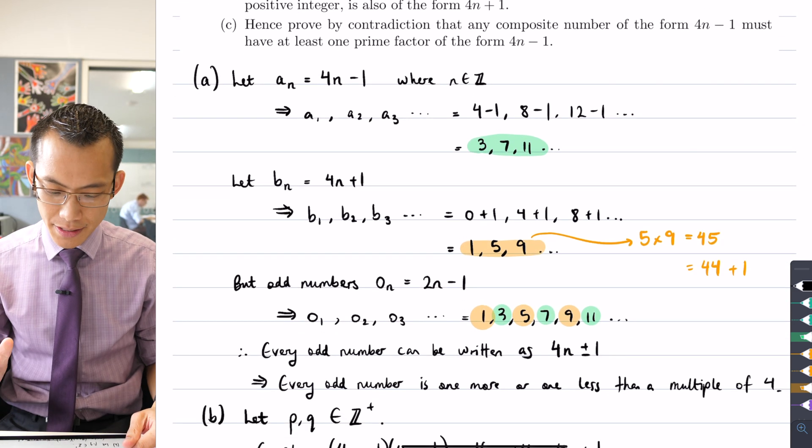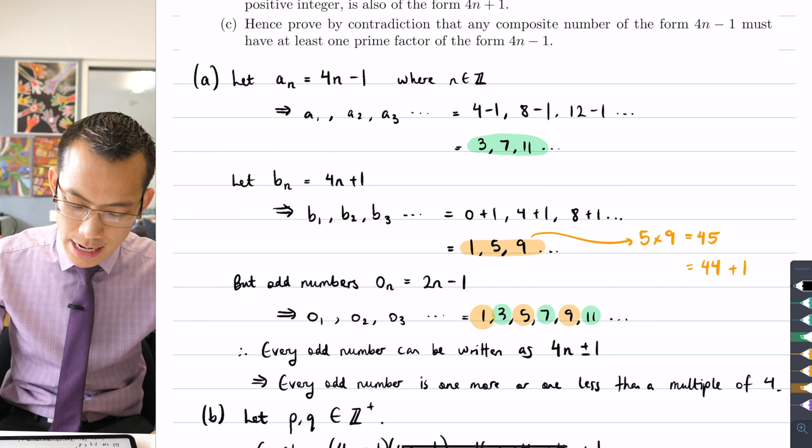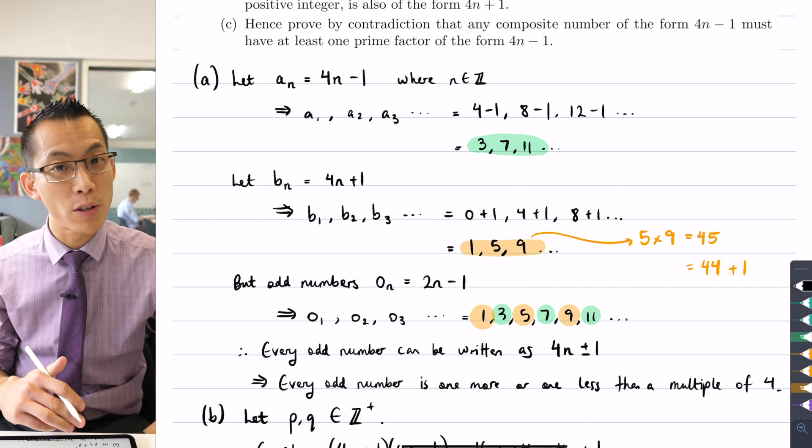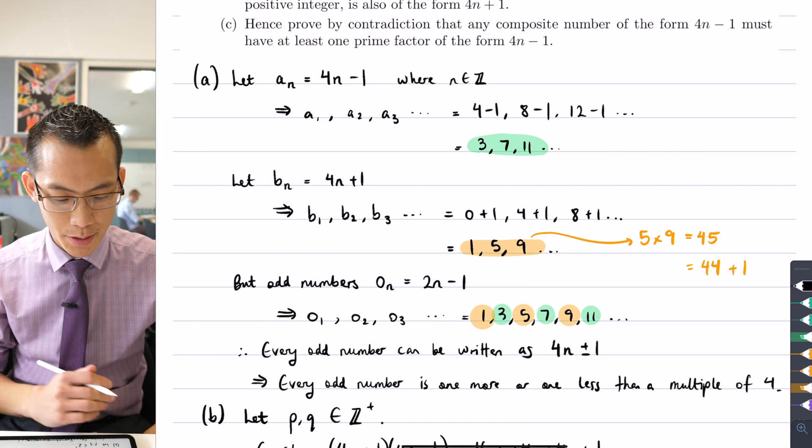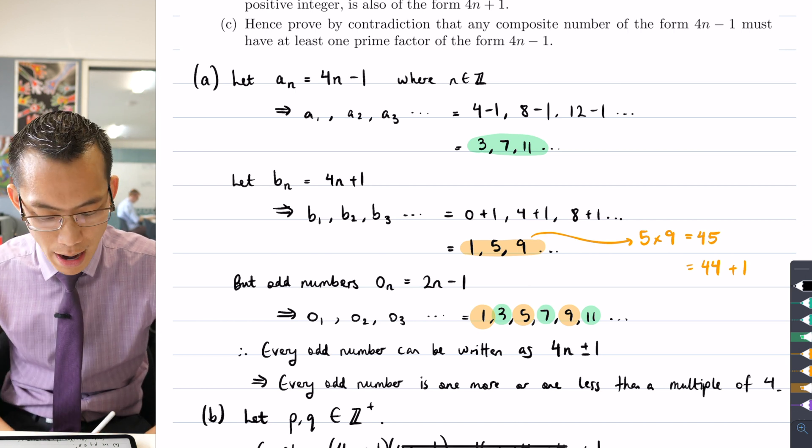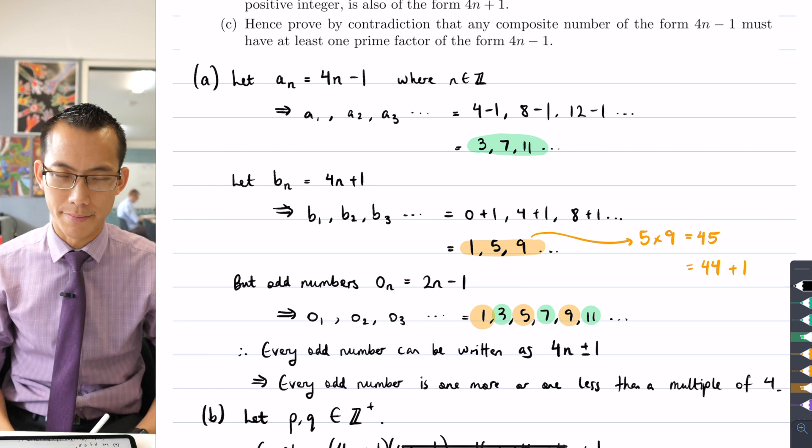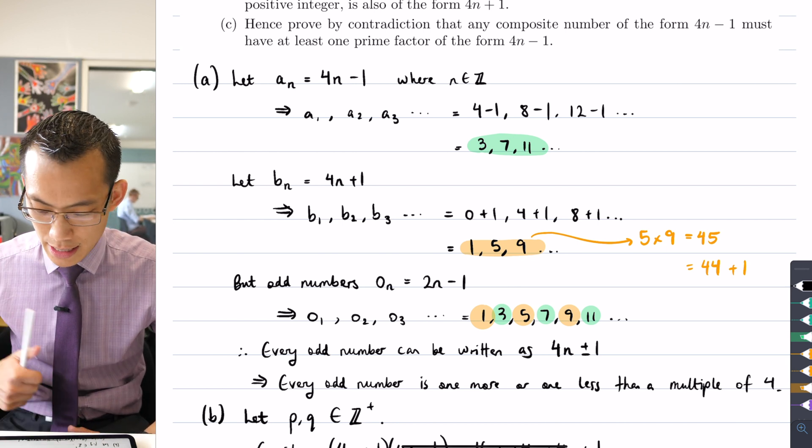It says, hence, prove by contradiction that any composite number of the form 4n minus 1, so now we look at the other kinds of odd numbers, they must have at least one prime factor of the form 4n minus 1. But what's going on here?